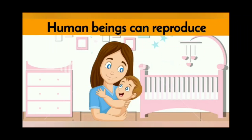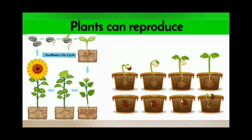Just as human beings can reproduce, a mother can give birth to a child. Plants are also living things, so plants can reproduce too. For example, we grow one seed of a sunflower and it becomes a plant — if we grow a seed, we grow a plant.